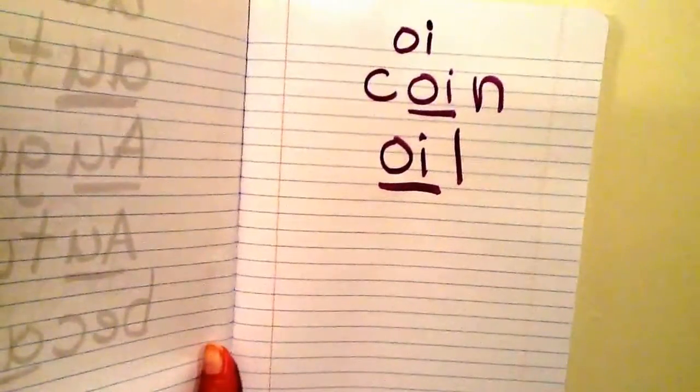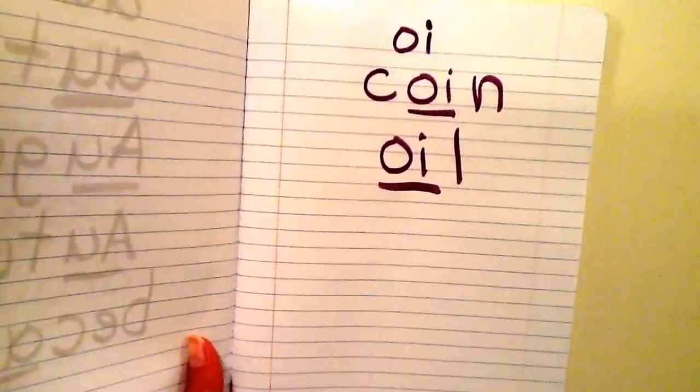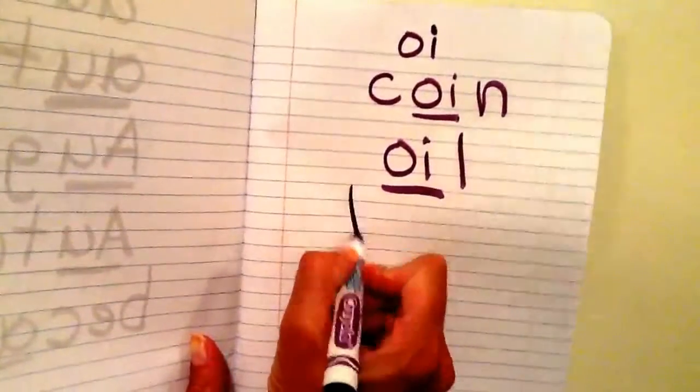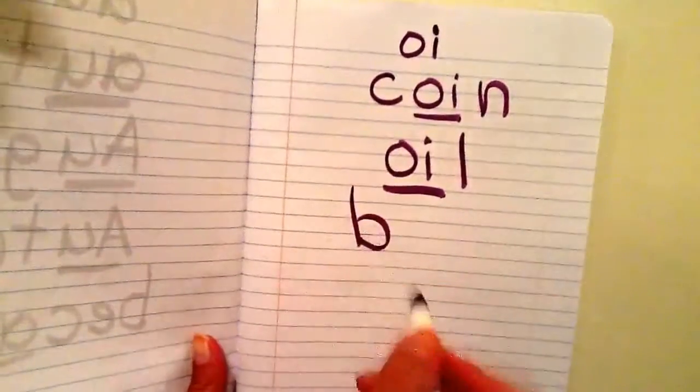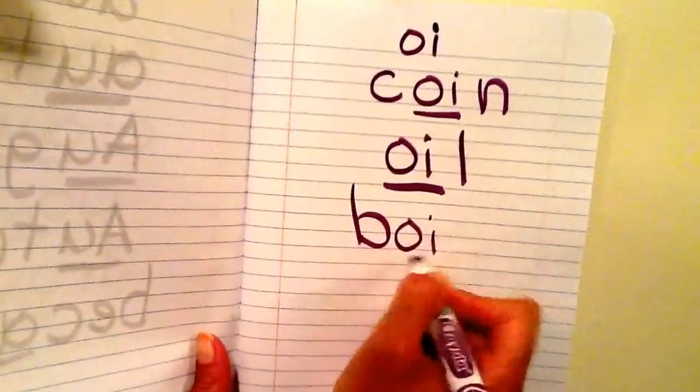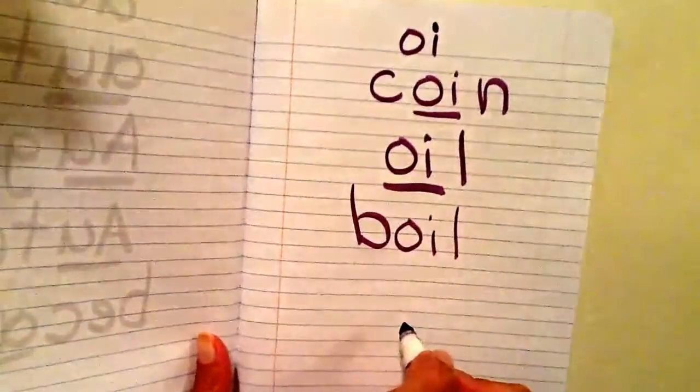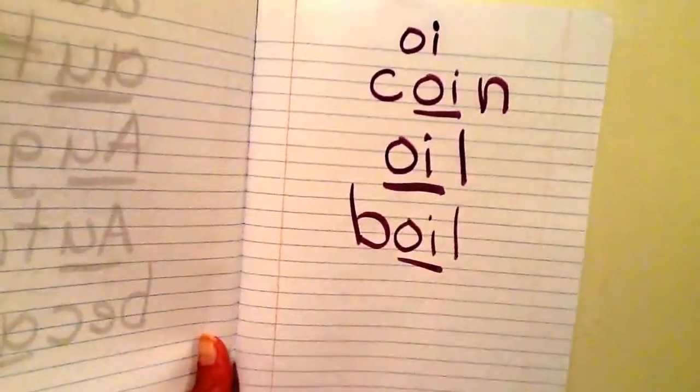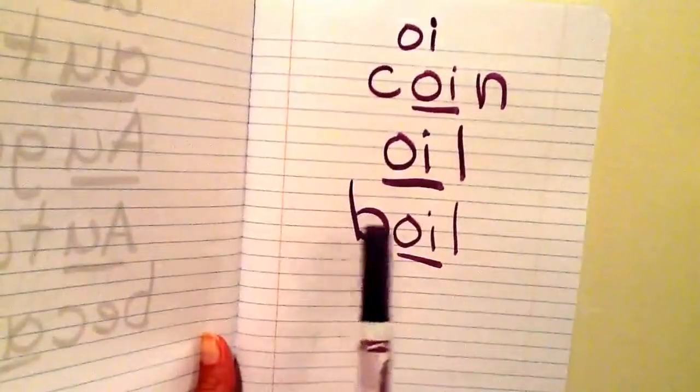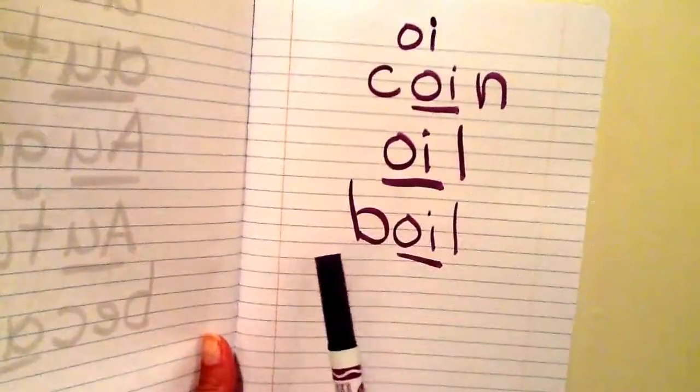Another word that has OI in it saying oy is the word boil. I'm going to write buh and then I hear oy, so I'm going to write OI boil. And then L at the end. And I'm going to underline OI going oy. Please write boil. B O I L. Boil.